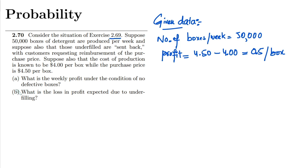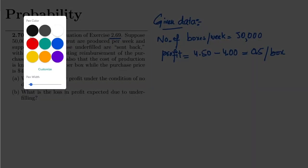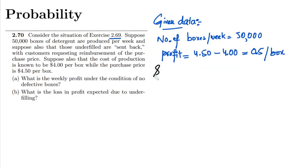have to find out? There are two options. In part A, we have to find the weekly profit under the condition of no defective boxes. In solving it, I can see that the number of boxes manufactured per week is 50,000 and there is a profit of $0.50 per box. Therefore, weekly profit